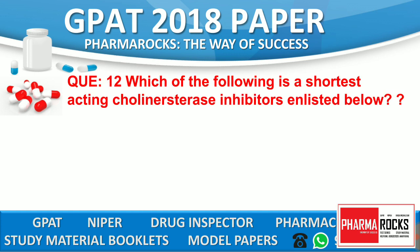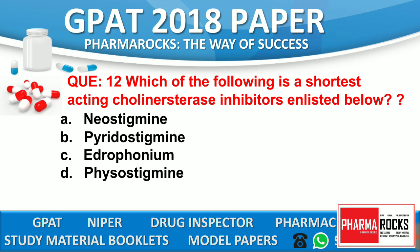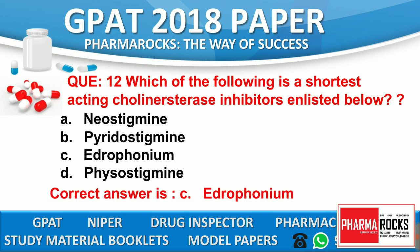Question number 12: Which of the following is the shortest acting cholinesterase inhibitor? Option A: Neostigmine. Option B: Pyridostigmine. Option C: Edrophonium. Option D: Physostigmine. The correct answer is C — Edrophonium.